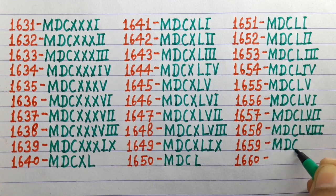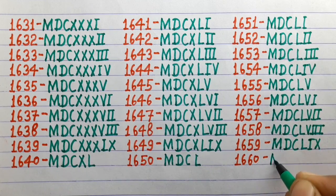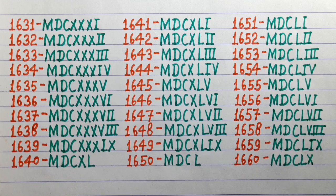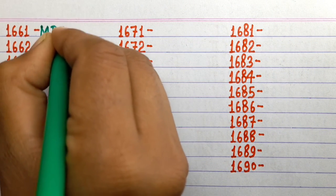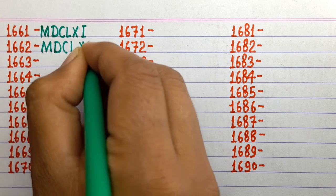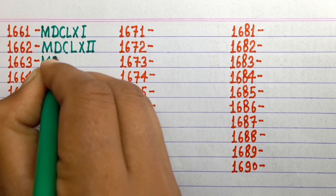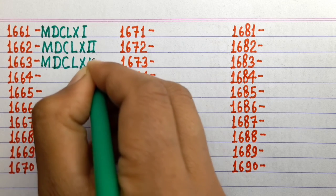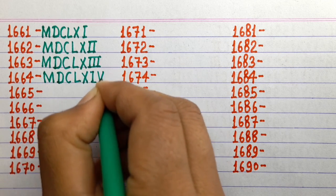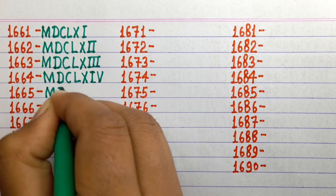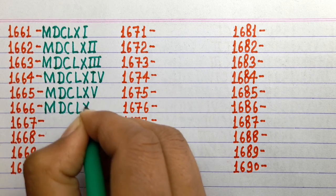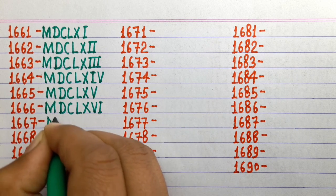1659 MDCLIX, 1660 MDCLX, 1661 MDCLXI, 1662 MDCLXII, 1663 MDCLXIII, 1664 MDCLXIV, 1665 MDCLXV, 1666 MDCLXVI.